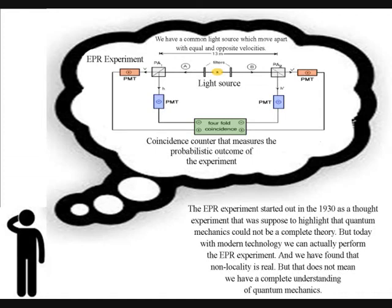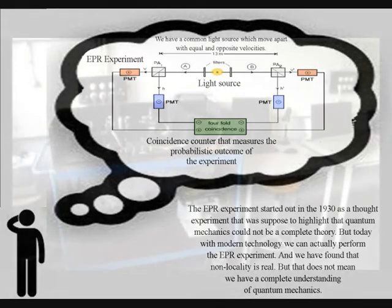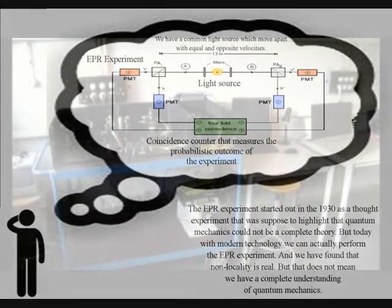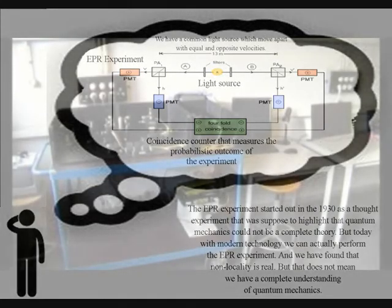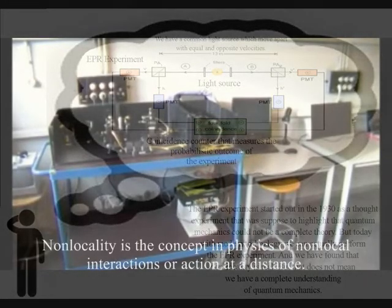The EPR experiment started out in the 1930s as a thought experiment that was supposed to highlight that quantum mechanics could not be a complete theory. But today with modern technology we can actually perform the EPR experiment and we have found that non-locality is real.